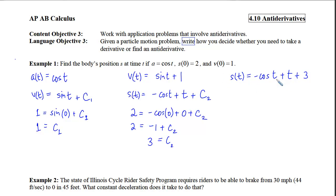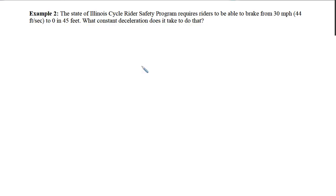With example 2, we are told the State of Illinois Cycle Rider Safety Program requires riders to be able to brake from 30 miles per hour, which is 44 feet per second, to 0 in 45 feet. And the question is, what constant deceleration does it take to do that?